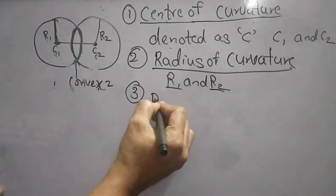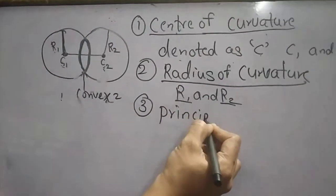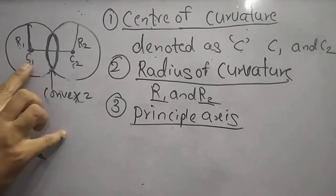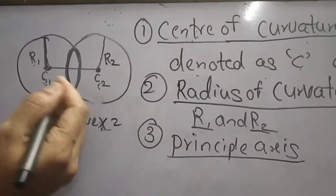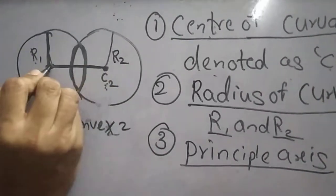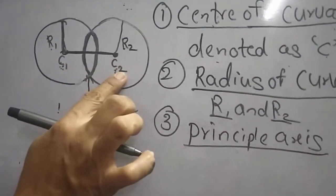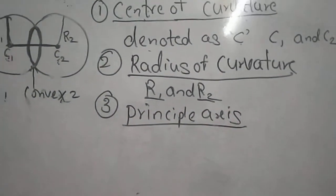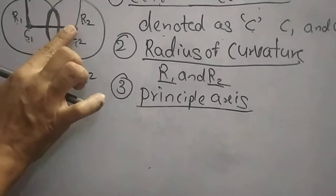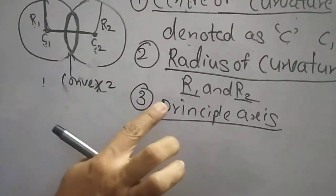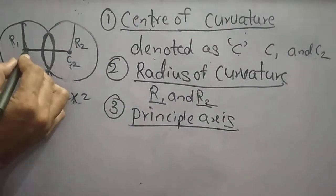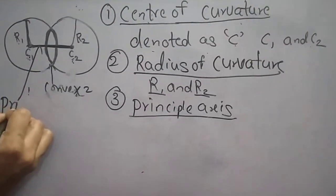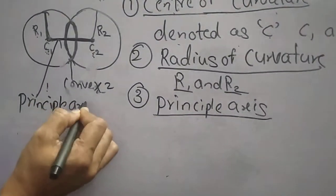The third definition is the principal axis. The principal axis is an imaginary line passing through both centers of curvature, C1 and C2. This imaginary line is known as the principal axis.